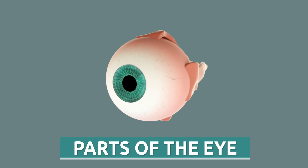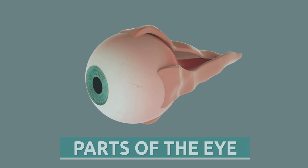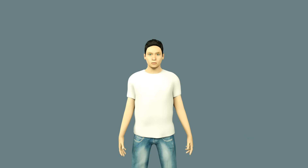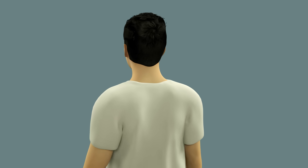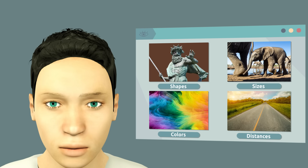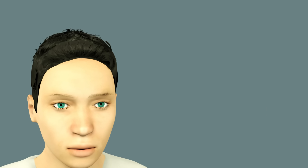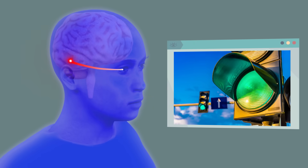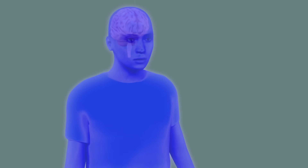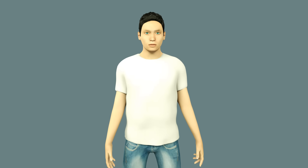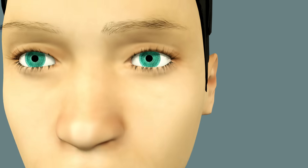Today we are going to learn about the parts of the eye. The eye is the sense organ of sight. It is in charge of collecting information from everything that surrounds us related to shapes, colors, sizes, and distances. The eye transmits the information to the brain, which makes us aware of what is happening around us. Imagine you see the green traffic light — the eye will transmit the information to the brain, and this will signal the muscles to move so that we can start crossing the street.